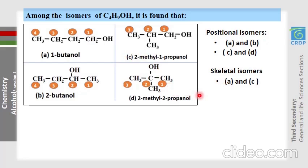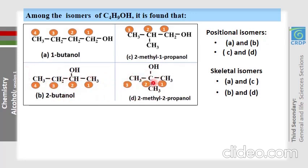It's your turn again — give another pair of skeletal isomers. B and D are skeletal isomers because they have different arrangements of carbon atoms, yet OH is on carbon number 2 in both molecules.